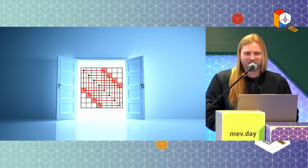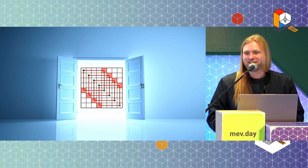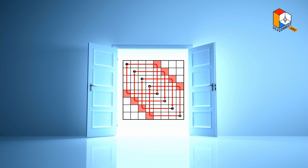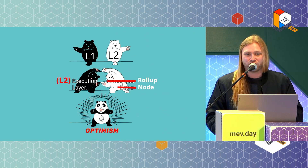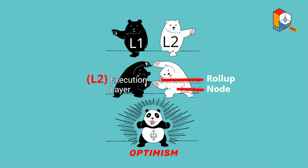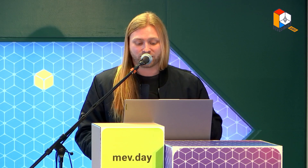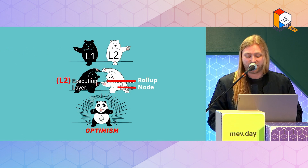Another really big thing that we're doing with Bedrock is we are reusing the ETH2 API. So if you are working on MEV stuff for ETH2, all of that is going to be able to work on Optimism with very low overhead. This is part of our whole EVM equivalent strategy, so that's a big deal — I really encourage you to check it out.